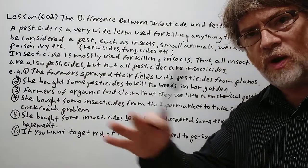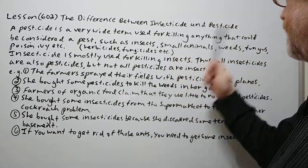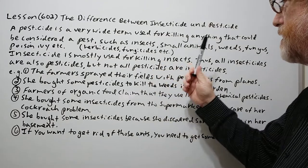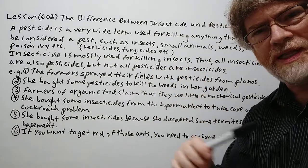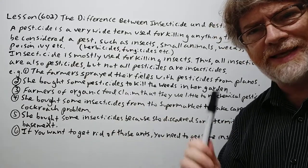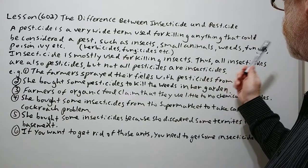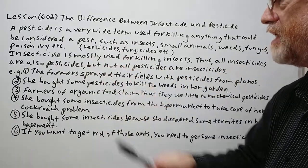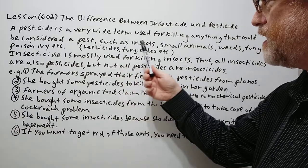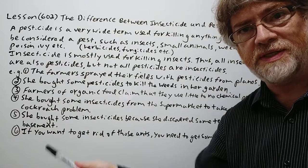A pesticide is a very wide term, so it covers a lot of things used for killing anything that could be considered a pest, such as insects, small animals, field mice, rodents, or anything that might eat crops. Weeds, fungus, poison ivy, etc. So anything in the category of herbicides, fungicides, or insecticides can also be pesticides.